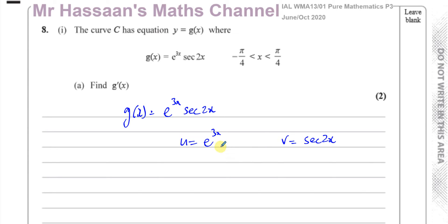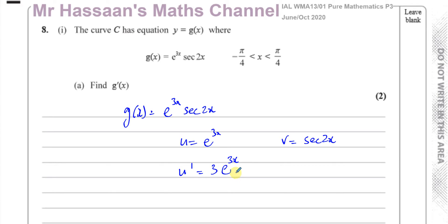I like to set it up with u on the left and v on the right. Underneath u, I write u dash, the differential of u with respect to x. Now, e to the power of something doesn't change when you differentiate it. However, when there's a function inside the function, you multiply by the differential of what's inside — that's the chain rule. So u dash equals 3e to the power of 3x.